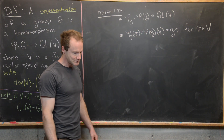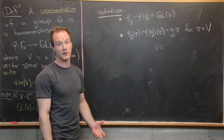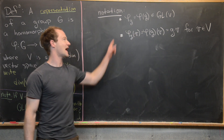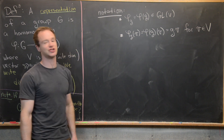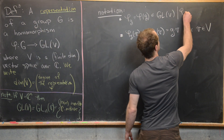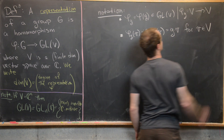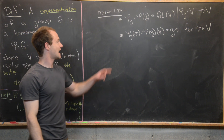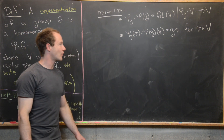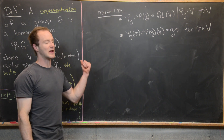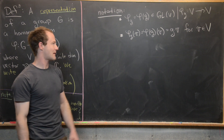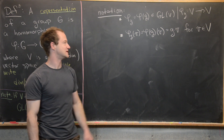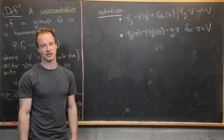Some additional notation: we often write phi_g for phi(g), which is the linear map in GL(V). So phi_g is an invertible linear transformation from V to itself. We write phi_g(v) for applying that map to a vector v, and when the homomorphism is understood, we write g·v for that action.